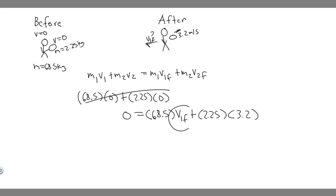So now what we can do is just go ahead and solve for V1 final. We move this to the other side. So minus 2.25 multiplied by 3.2 is equal to 68.5V1 final. What you can do is just divide by 68.5.